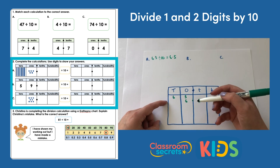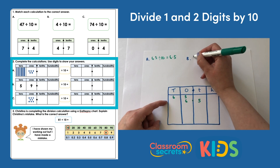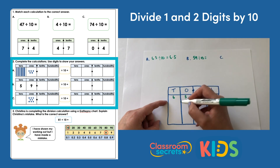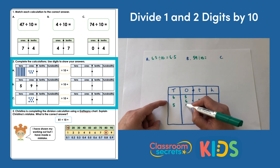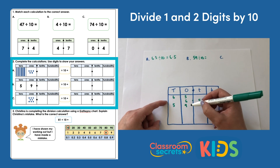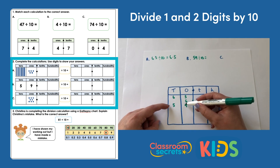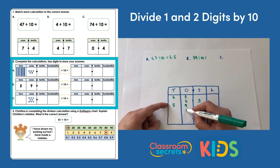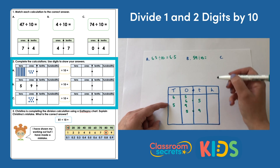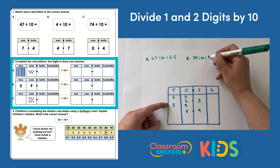The next one is 59 divided by 10 — same thing. 5 tens and 9 ones. We're going to move each digit one place to the right, so we end up with 5 ones, decimal point, 9 tenths. So the answer is 5.9.